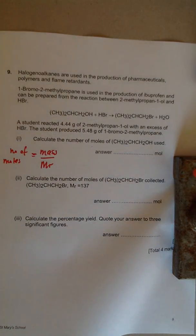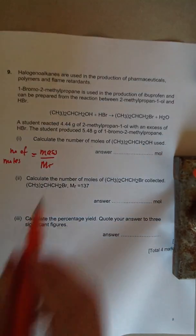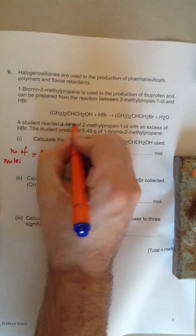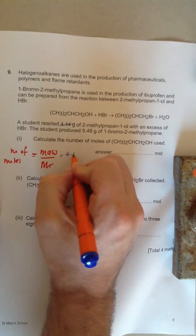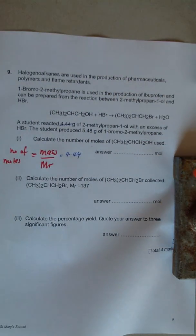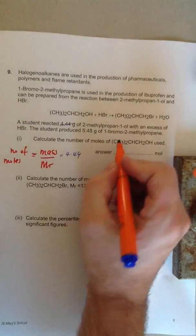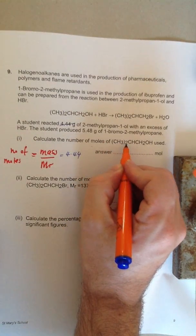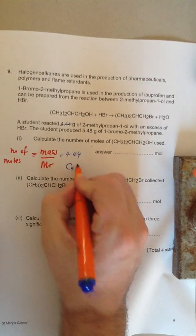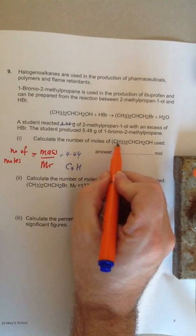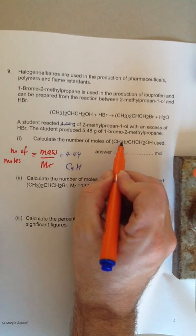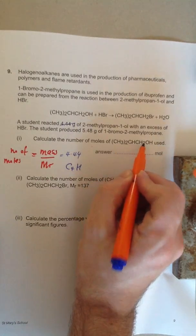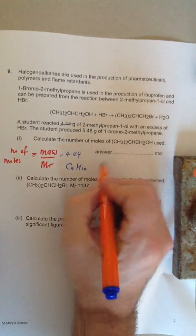So to get us underway, I'll write down the mass of the 2-methylpropan-1-ol, so that's 4.44. And we need to work out the MR, the molecular mass of your 2-methylpropan-1-ol. So to work out the MR, we need to calculate the number of hydrogens: 6, 7, 8, 9, 10. And there's one oxygen.